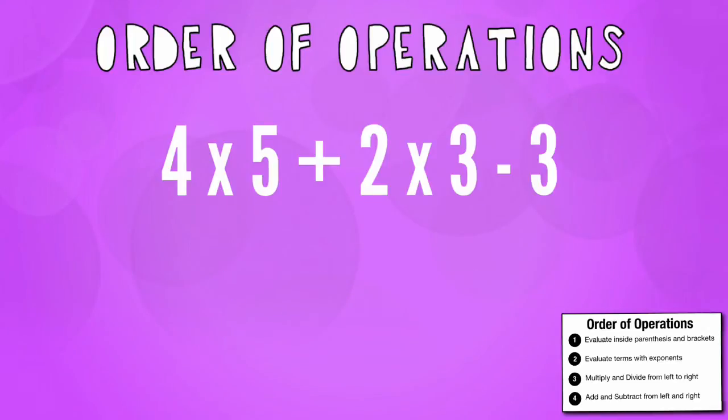What happens if we don't use order of operations? Let's see. 4 times 5 is 20 plus 2 times 3 minus 3. 20 plus 2 is 22 times 3 minus 3.